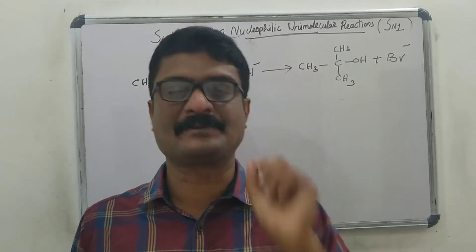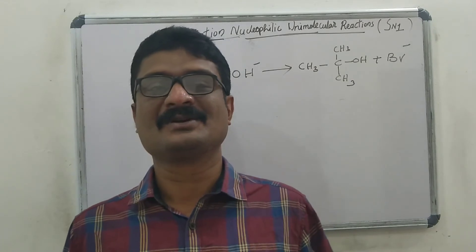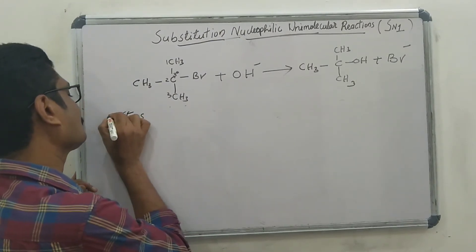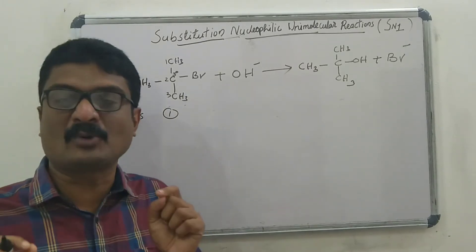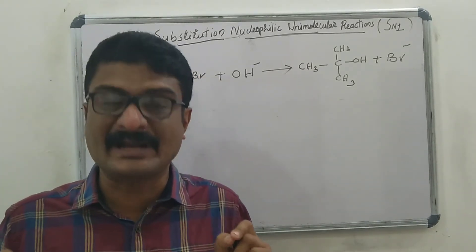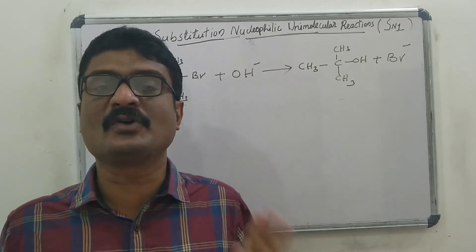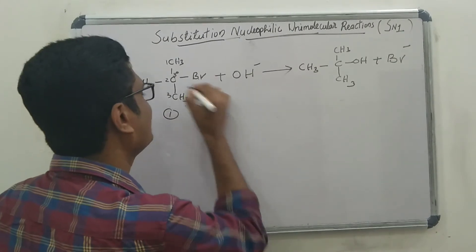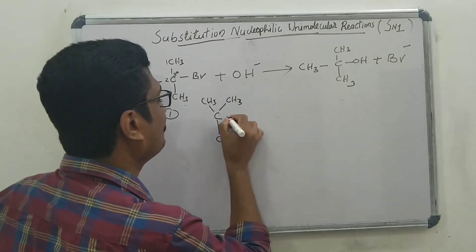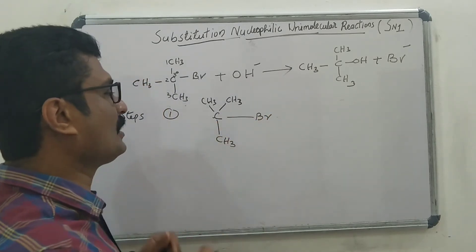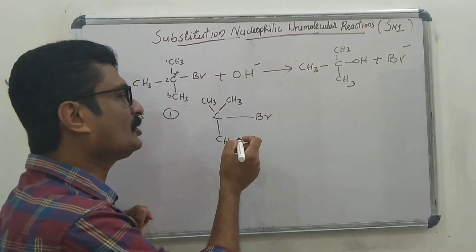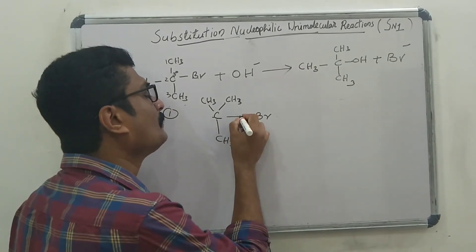This SN1 mechanism occurs in two steps. First step: the polarized C–X bond, that is the carbon–halogen bond, undergoes slow heterolytic cleavage to form a carbocation. The carbon–halogen bond is polar in nature, and this carbon–halogen bond undergoes slow heterolysis to form a carbocation.